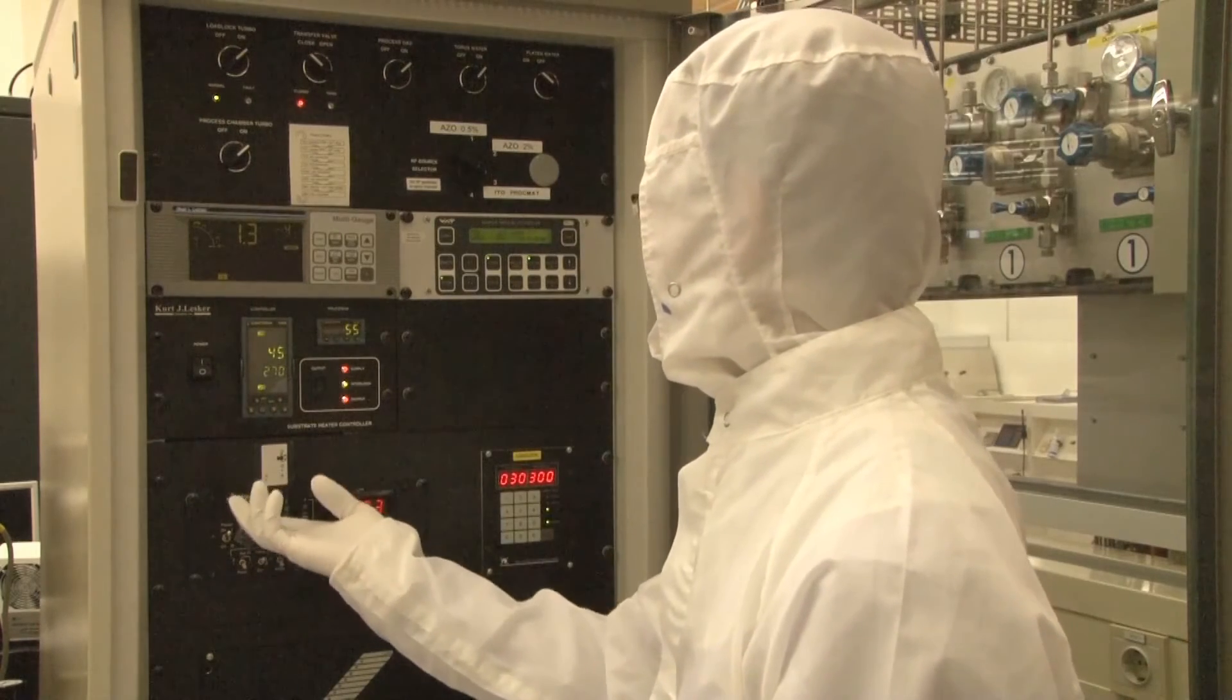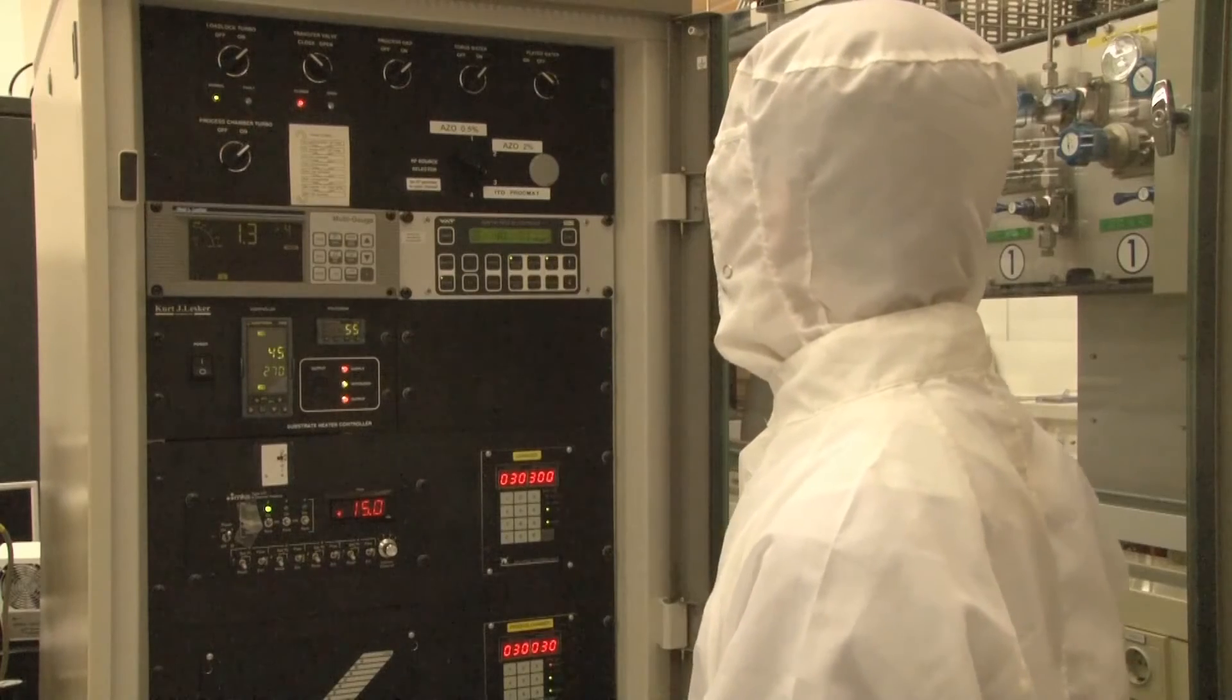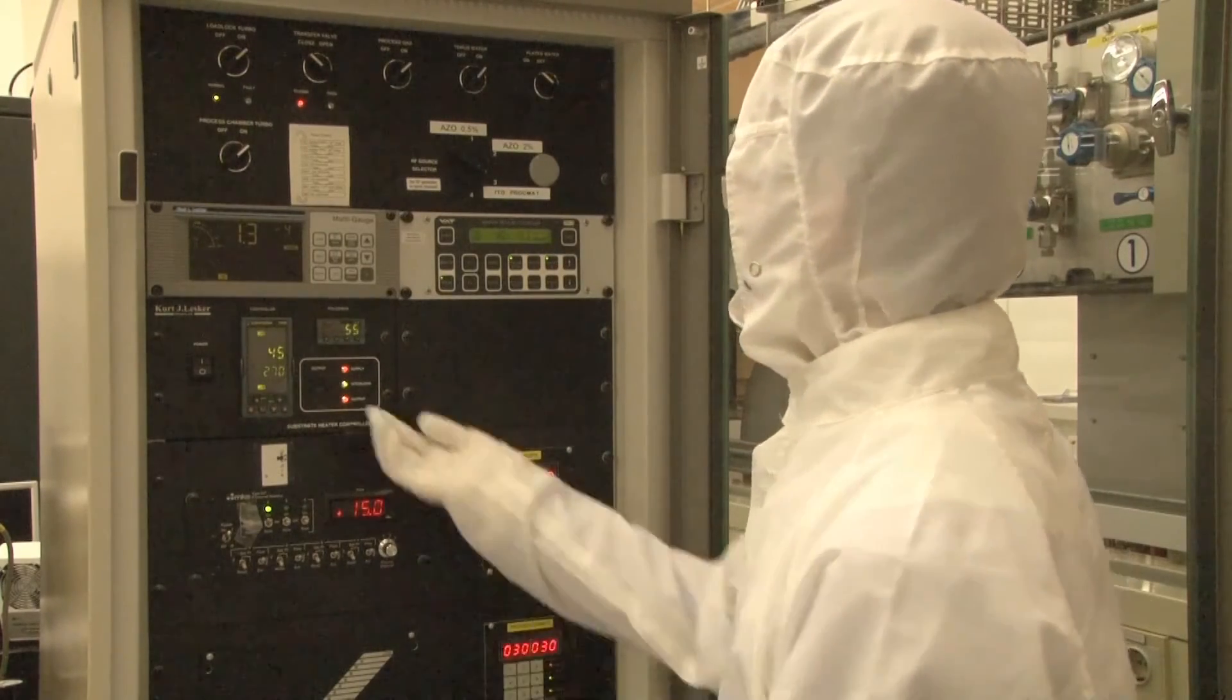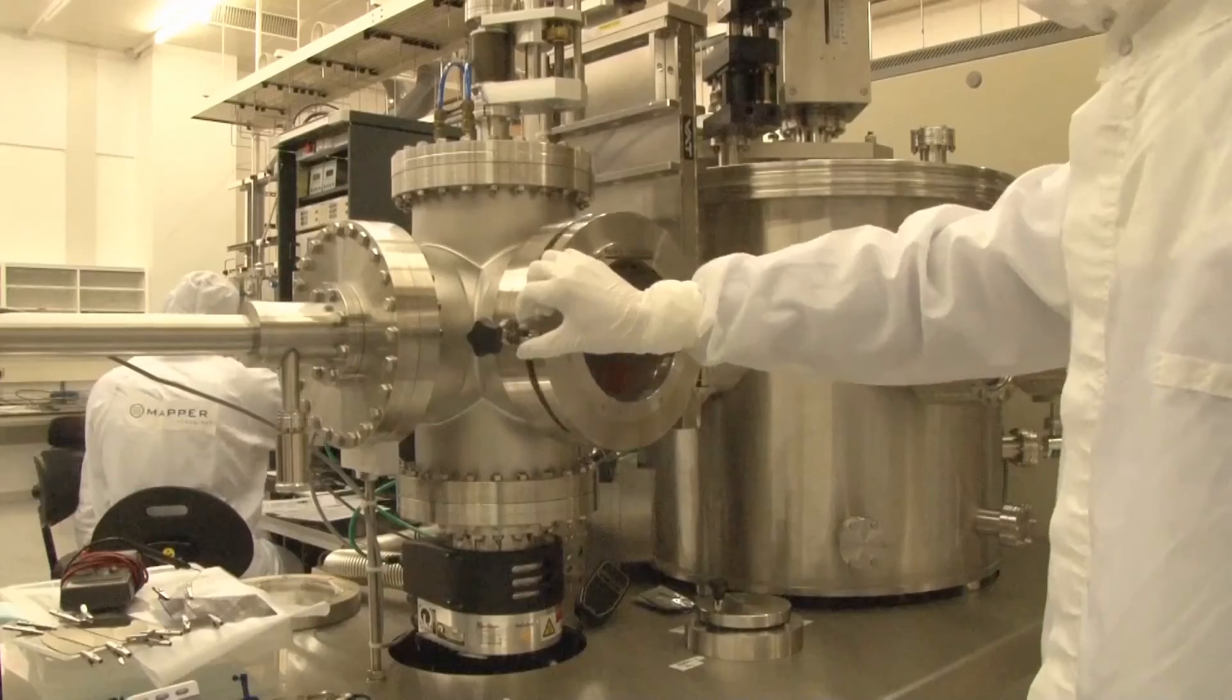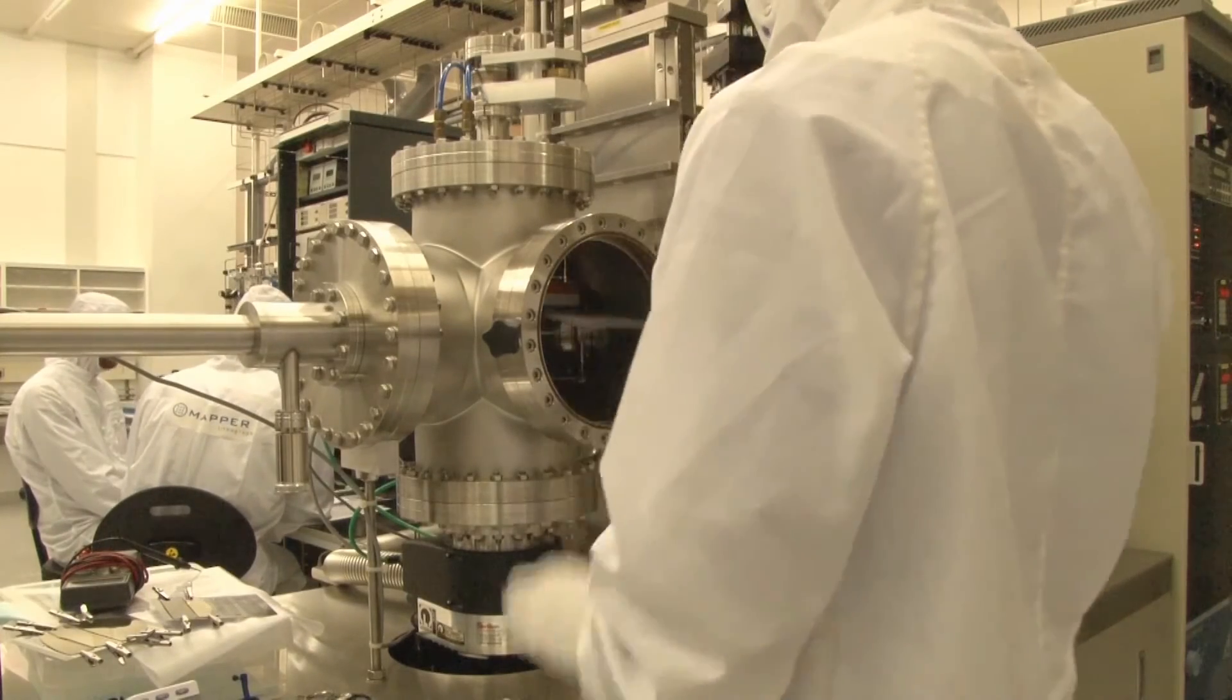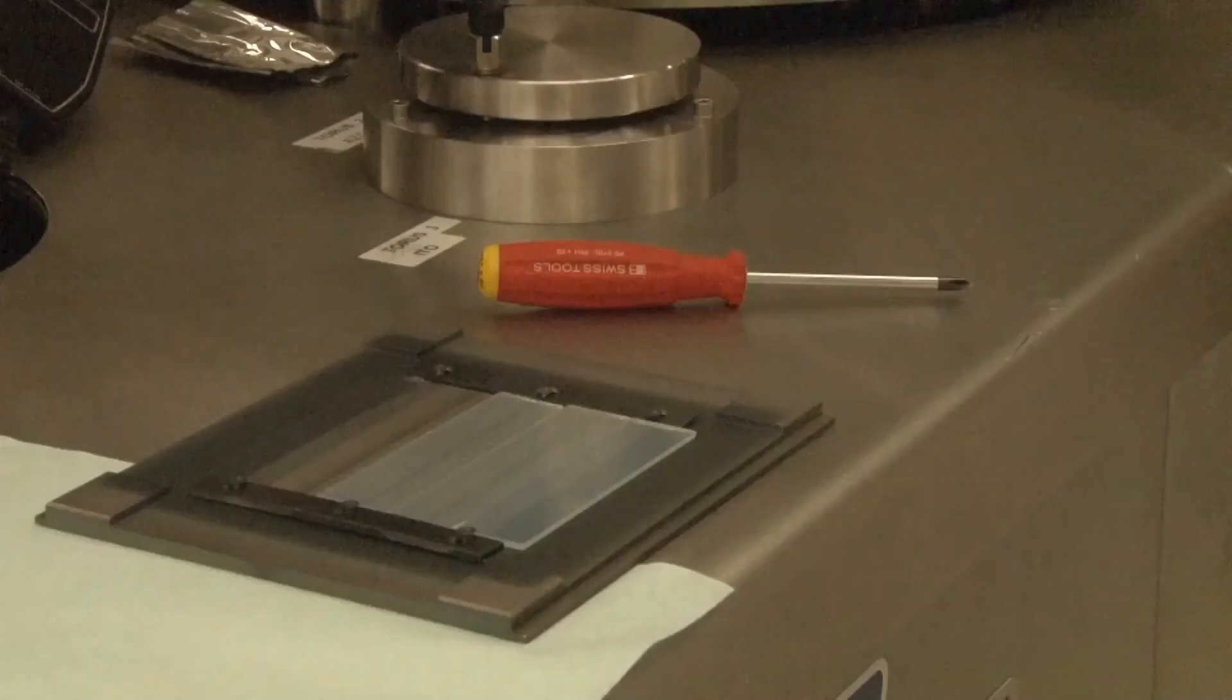During sputtering, the zinc oxide target is bombarded using an ionized noble gas like argon. The generated aluminum zinc oxide species are sputtered into the chamber and deposited onto the substrate. Here you see the sputtering plasma. After the sputtering processing step, we have a glass plate with a thin oxide with on top a very thin zinc oxide layer.